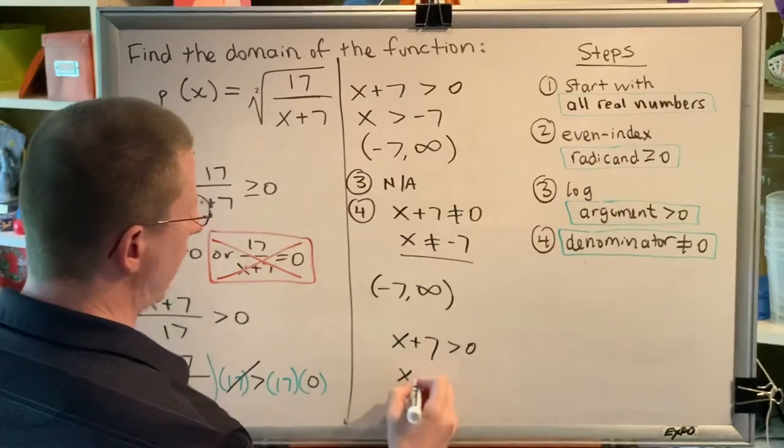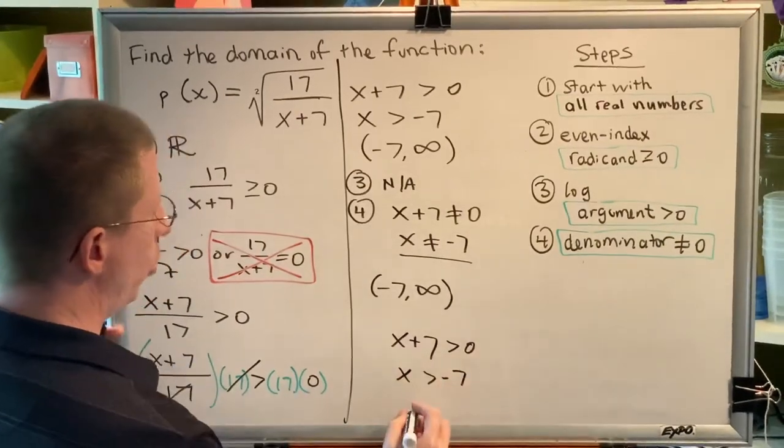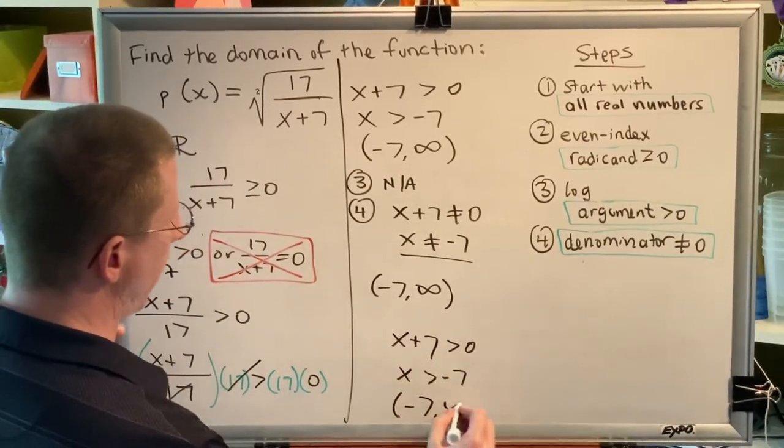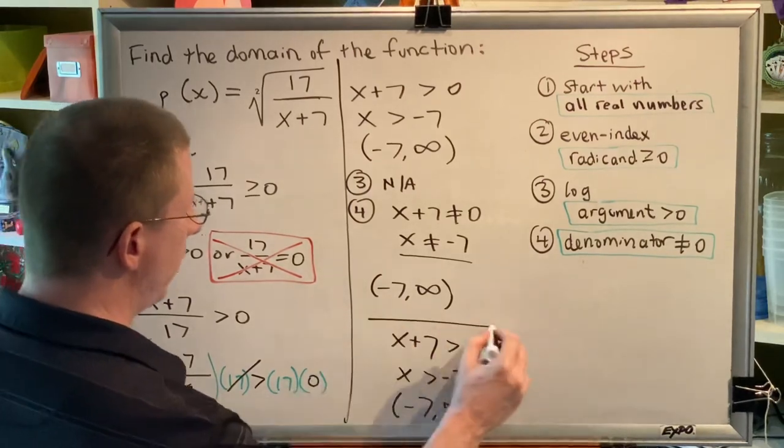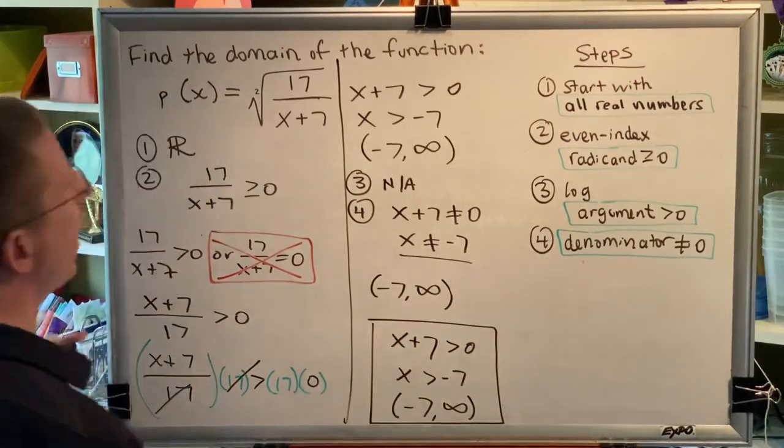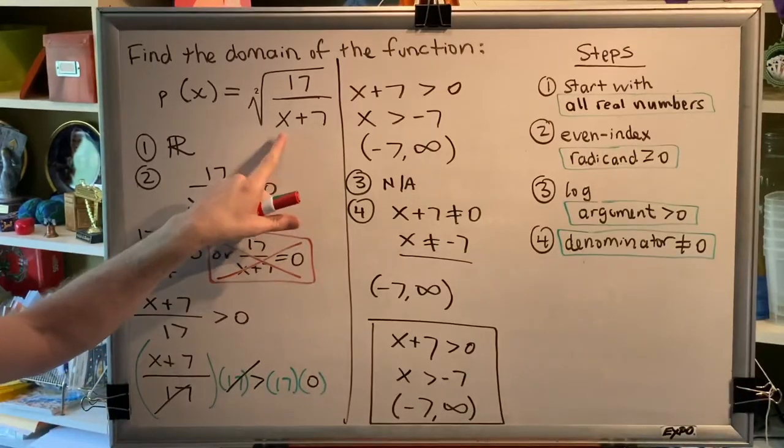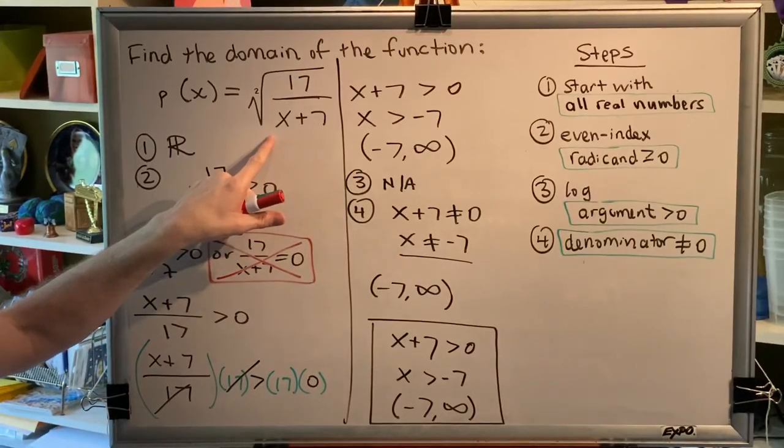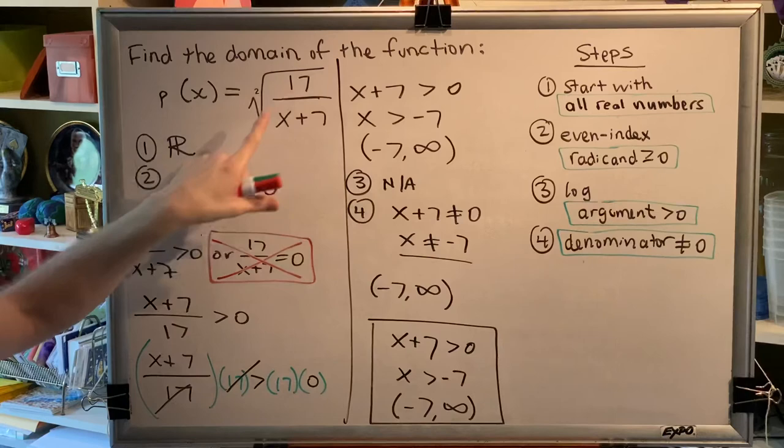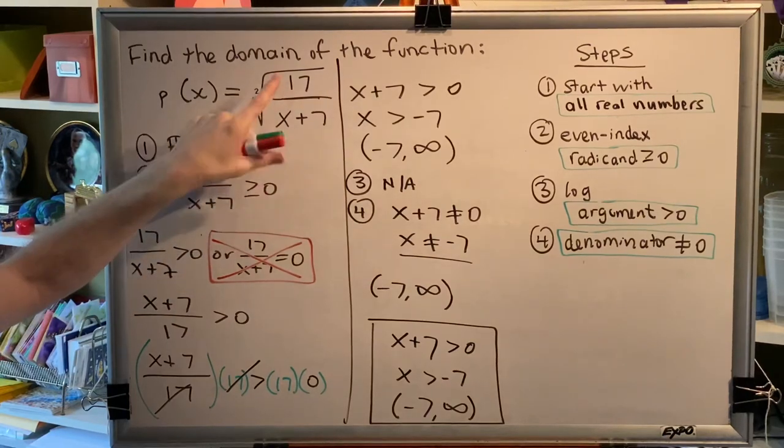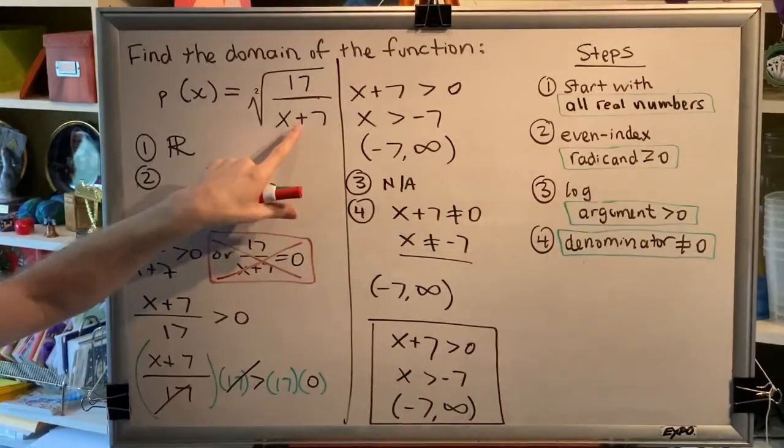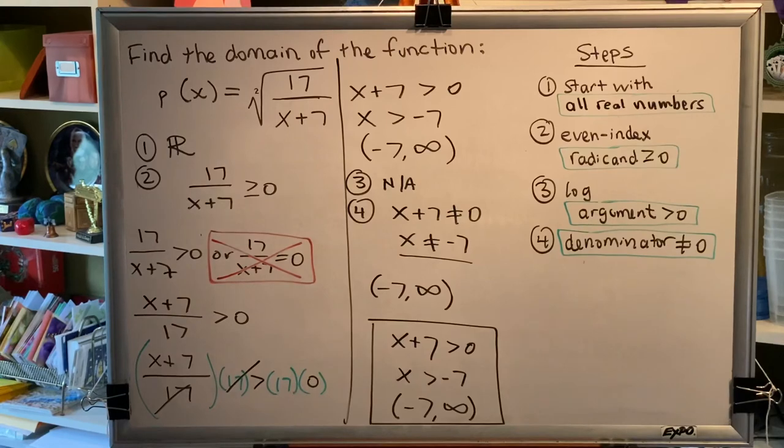Solving this, I get x is greater than negative 7, which is the interval negative 7 comma infinity. This is a much shorter way of getting to the answer, but it only works for problems that are of this very specific type, which is where you have a fraction under a square root, the numerator is just a number, and the denominator is an algebraic expression.